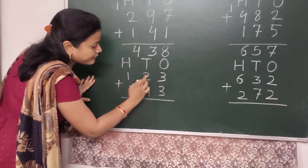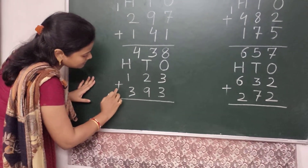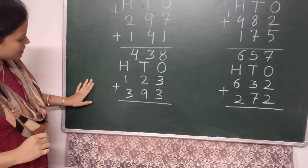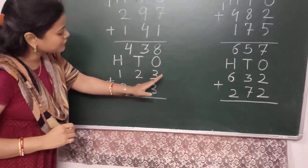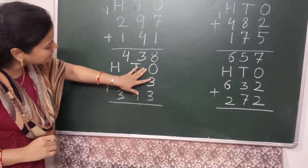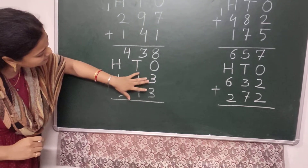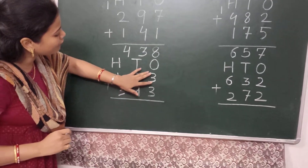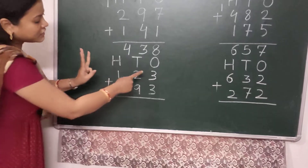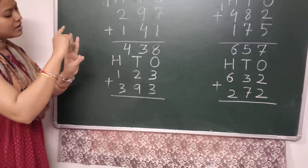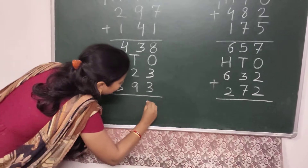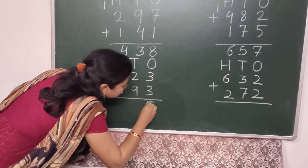Your next sum is 123 plus 393. We have to start the sum from the 1's place. In the 1's place, the numbers are 3 and 3. I keep 3 in my mind and take 3 fingers: 3, then 4, 5, and 6. I write here 6.